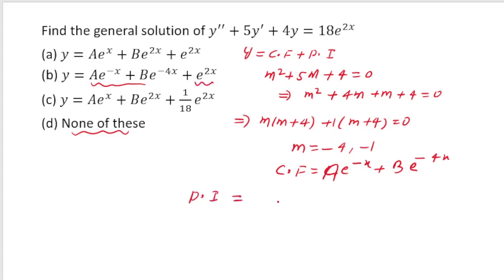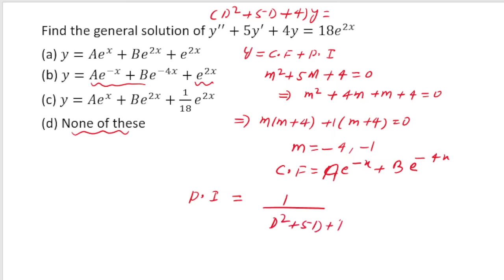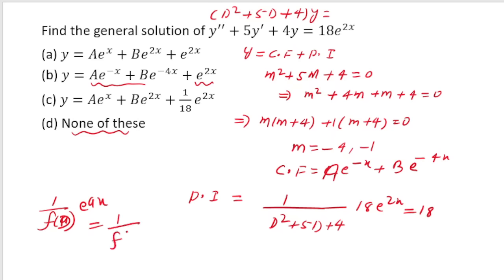To find the PI, I operate 1/(D²+5D+4) on 18e^(2x). The formula to use is: 1/f(D) of e^(ax) = 1/f(a) · e^(ax), provided f(a) ≠ 0. Here 18 is a constant and will come out.